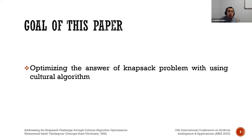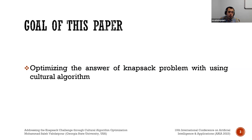We aim to do three big things. First, we want our solutions to be super smart, meaning they pick the best items. Second, we want our way of solving this problem to work for all sorts of situations, whether they're big or small. And third, we're mixing things up by introducing a cultural algorithm into our solution — it's like making a superhero team even more powerful. In this presentation, we guide you through how we do all of these.